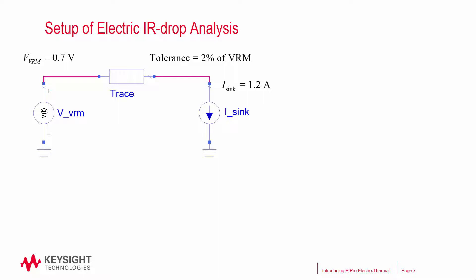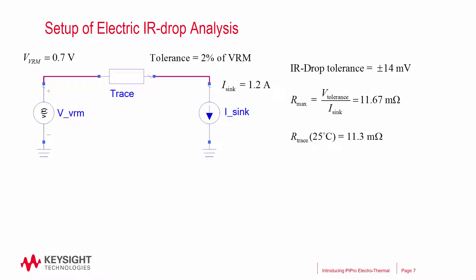Here's the setup for the electric-only IR drop analysis. There's a VRM outputting 0.7 volts, and a device sinking 1.2 amps of current. Given 2% of the VRM voltage as the sink tolerance, we can calculate the maximum allowable resistance of the trace. And because the resistance of the trace under test is lower than the maximum resistance, we should expect to pass the margin test.